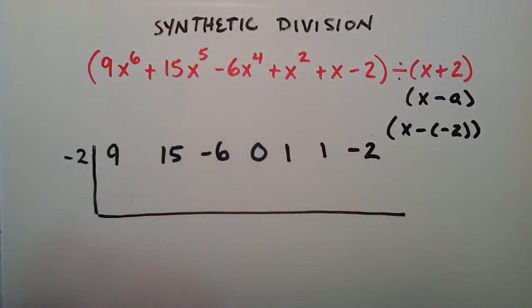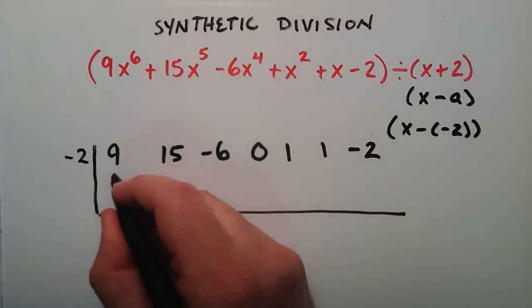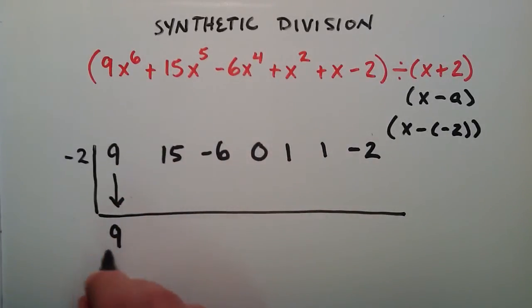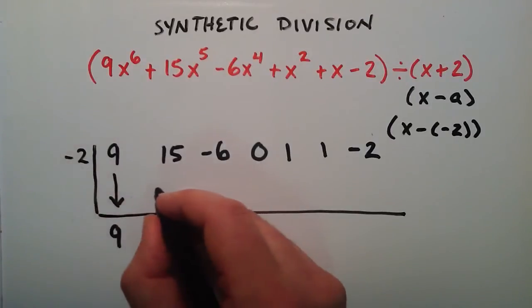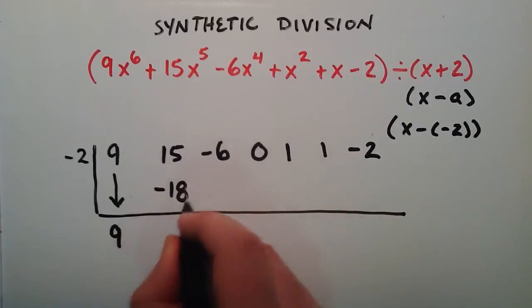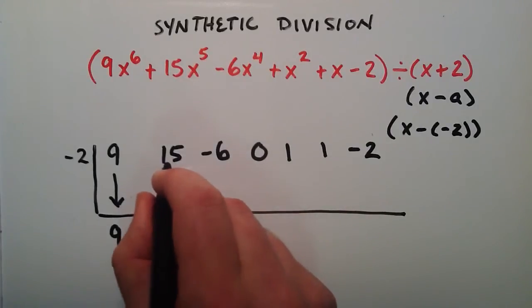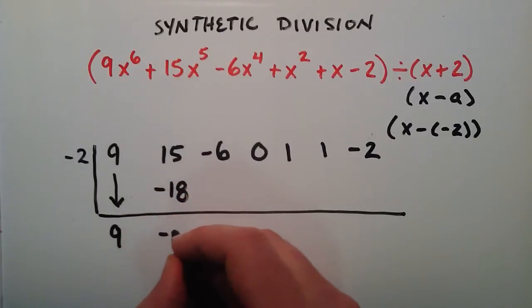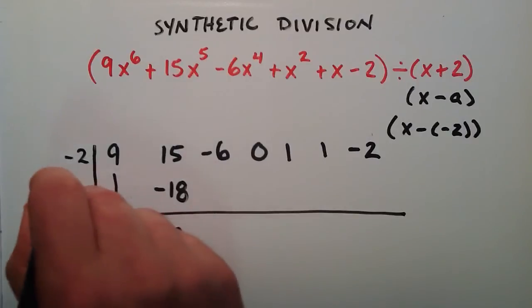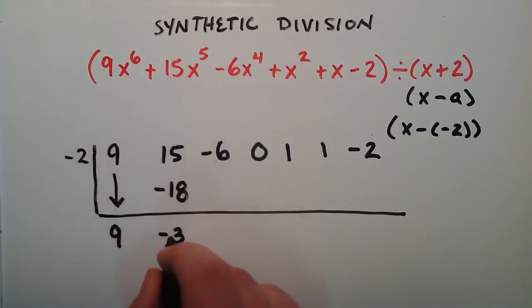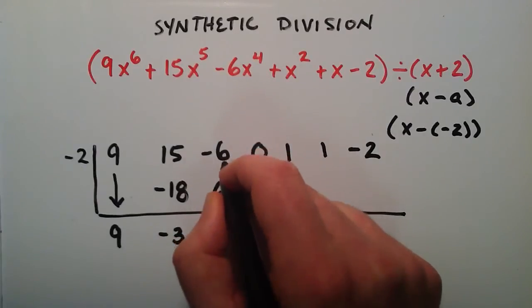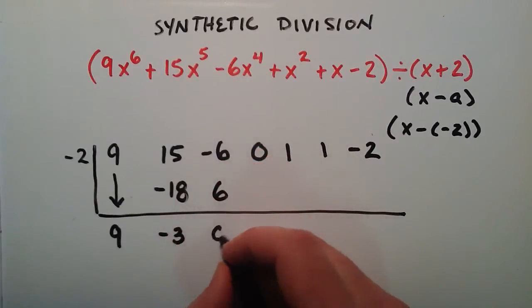So to start the synthetic division process now, we just simply drop the first coefficient down below. And then we take that coefficient, we multiply it by our a term. So 9 times negative 2 is a negative 18. We write that in the next available space here. Then we take this number, add it to this number. 15 plus a negative 18 gives us a negative 3. The numbers down here we multiply against the a term. So negative 3 times a negative 2 gives us a positive 6. Adding these two together, negative 6 plus a positive 6 gives us 0.